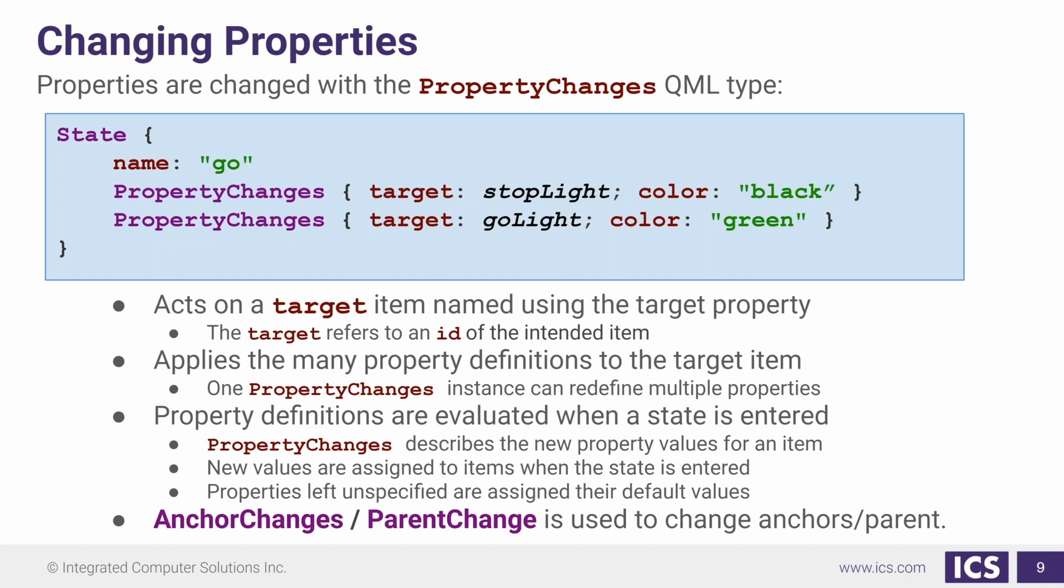We're only changing one property in our example. However, we could have changed additional properties here, such as the X, Y, height, or almost any other property that our target has. The properties that we can't change are going to be the parent and the anchors. If we want to change those, we must use the anchor changes or the parent change item instead of the property changes.